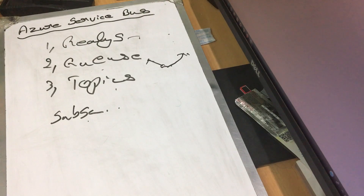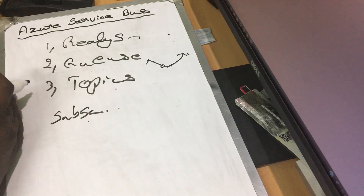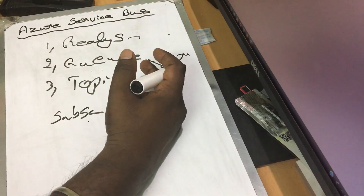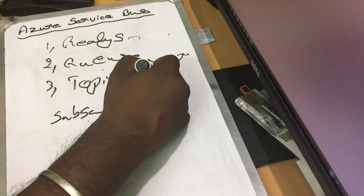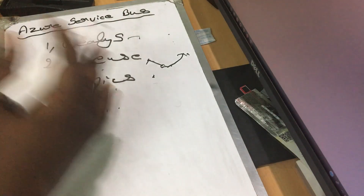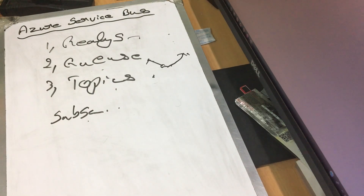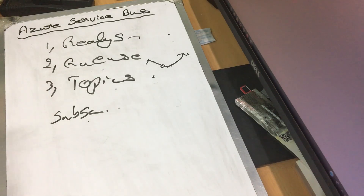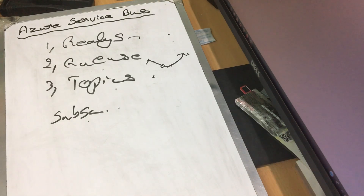So this is Service Bus. The main concept is that two applications are used. If you have one application, you can use it on-premise, and the other application is in the cloud. You can use it within the cloud — a good way of communication. So this is the basic detail, and we will talk about this in the upcoming videos. If you have any doubts, we will explain in the comments section. Thank you.